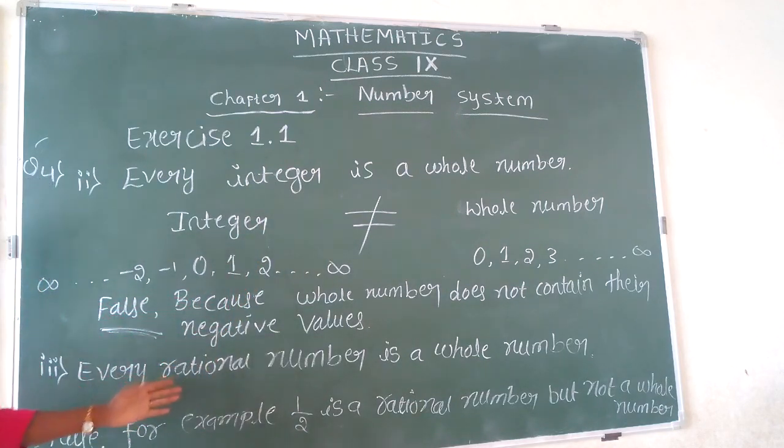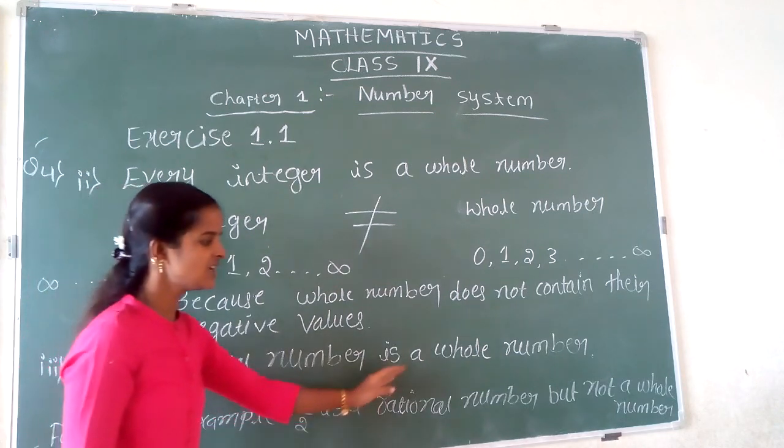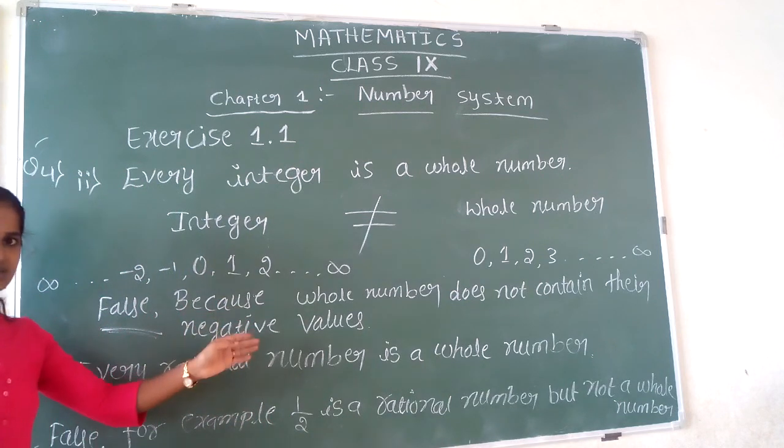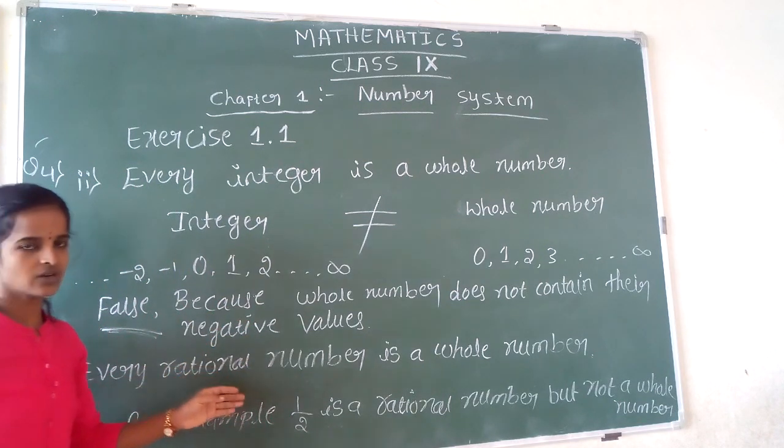1, 2, 3... For example, this statement is false because 1/2 is a rational number but not a whole number. Whole number does not contain all rational numbers. Ok, thank you.